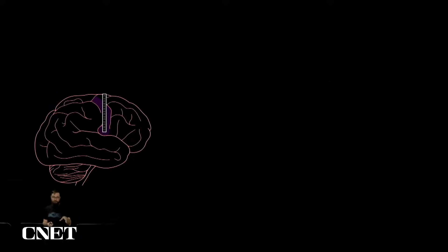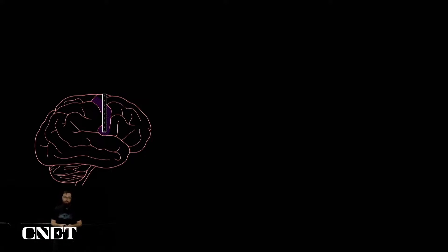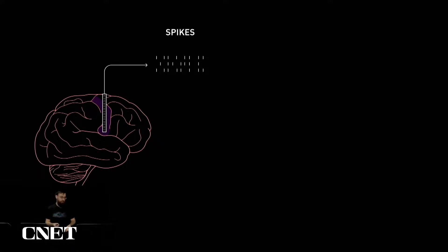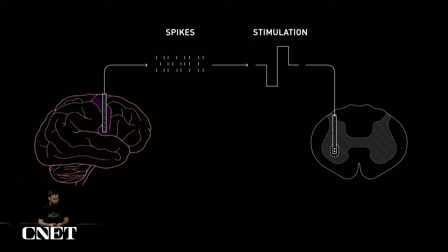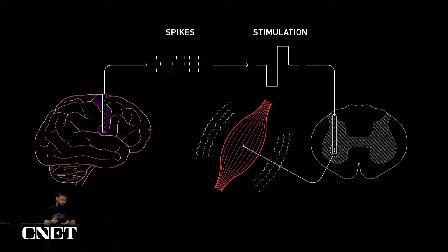Stimulating the spinal cord is only one piece of the story — you also need command signals for the stimulation. We have the N1 link placed in motor cortex. We place threads in motor cortex and record spikes. These spikes are wirelessly transmitted in real time and decoded into patterns of stimulation. Stimulation is then delivered to the ventral horn of the spinal cord, to the appropriate motor pool for the muscles we'd like to activate — we stimulate, activate those lower motor neurons, which causes the muscles to contract and movement to occur.